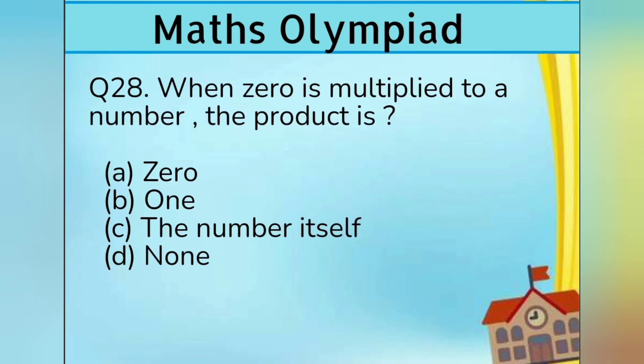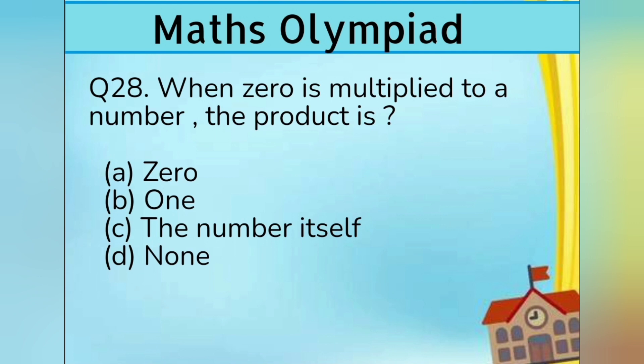Question number 28. When 0 is multiplied to a number, the product is: Option A 0, Option B 1, Option C the number itself, Option D none. Answer is Option A 0.